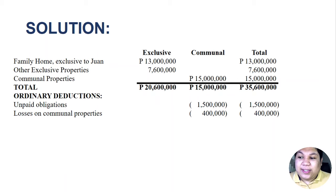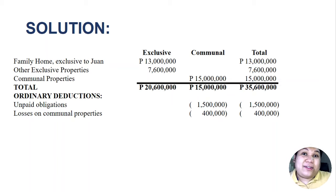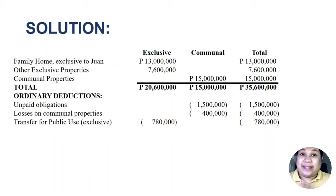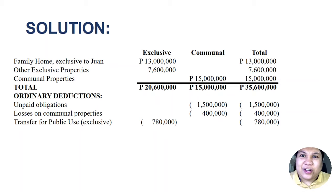Losses on communal properties are expressly indicated as pertaining to communal property. The deductible loss is only 400,000 — because even though the actual loss was 500,000, there was an insurance recovery of 100,000, so we only deduct the excess not covered by insurance. For transfer for public use — since that was from exclusive property — we deduct it from the exclusive column. There is no vanishing deduction, so these are all the ordinary deductions.